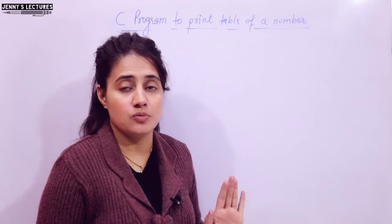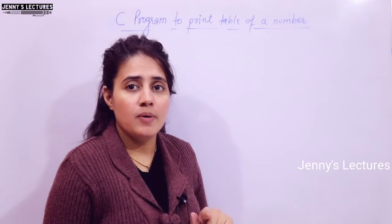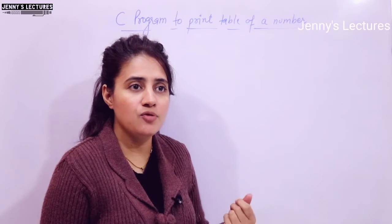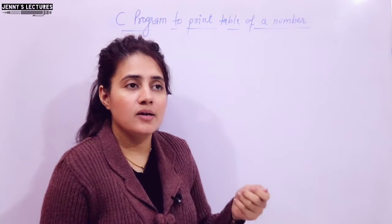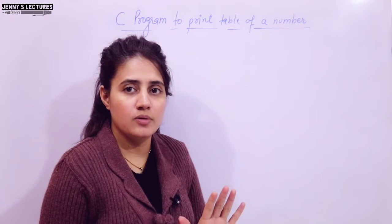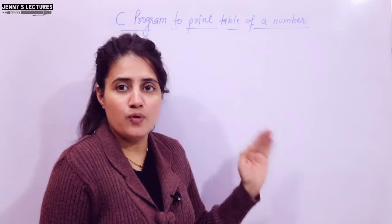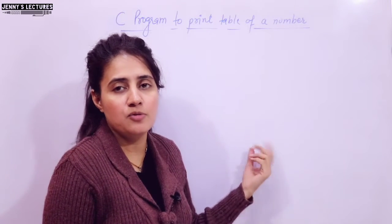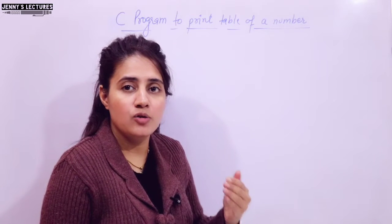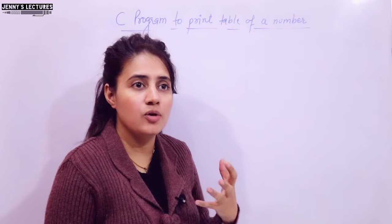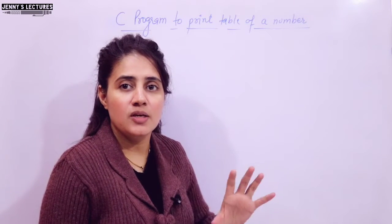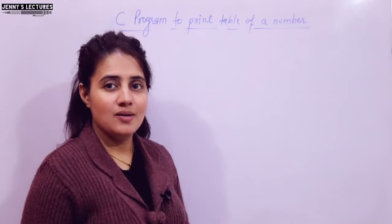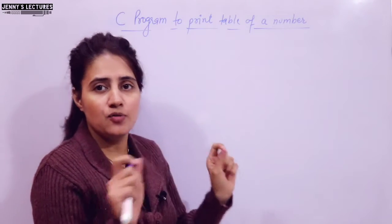In this video I'll talk about a program using for loop — how you can write a program, how you can think of a logic, how you can identify that here you have to use a loop. We've discussed for loop, but you can use while loop or do-while loop also. I'll use for loop here, covering when to use it, what termination condition to put, and whether to increment or decrement.